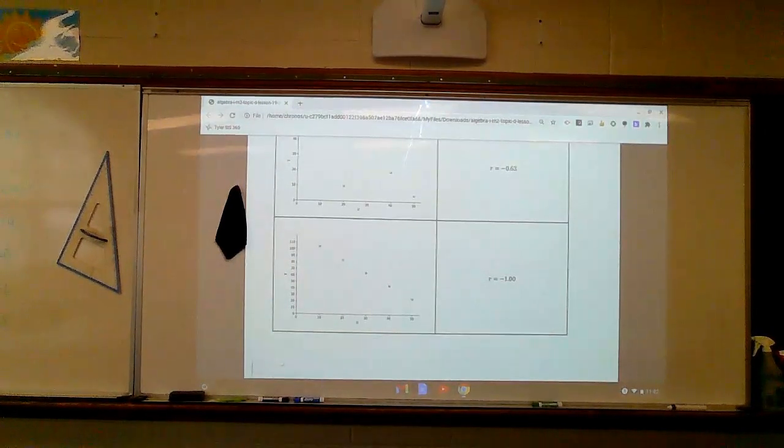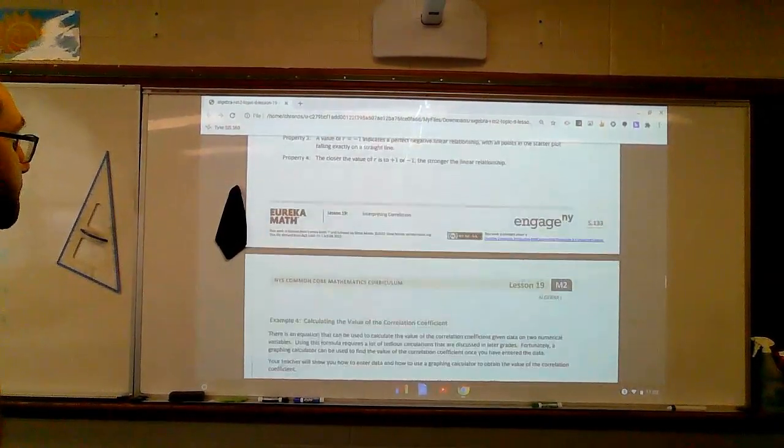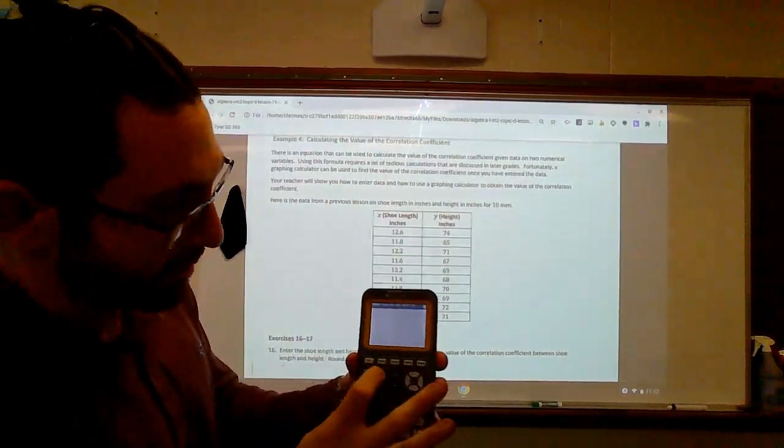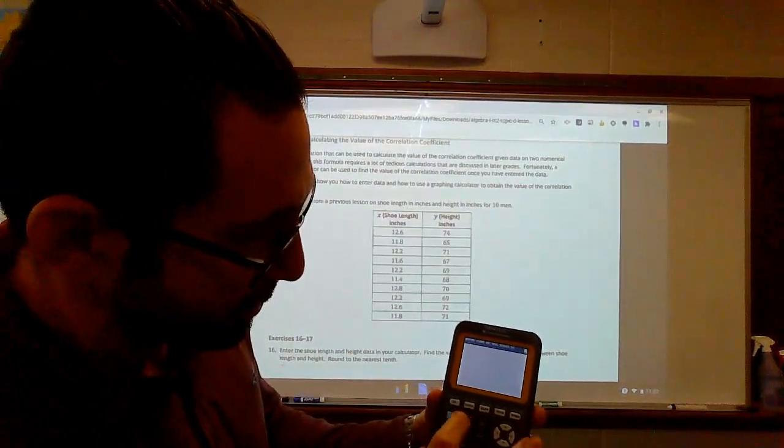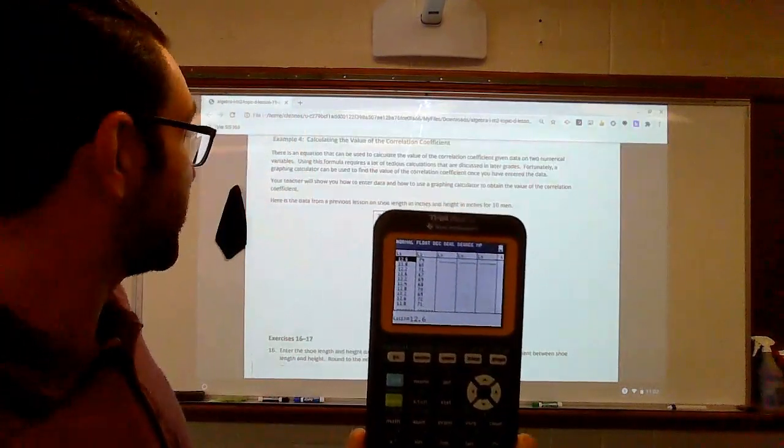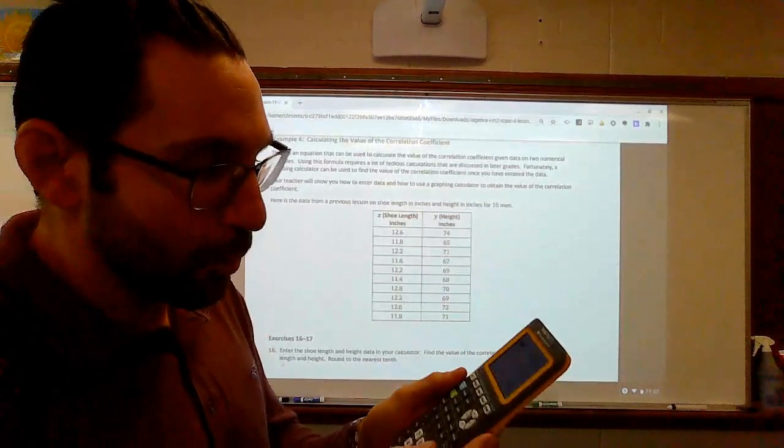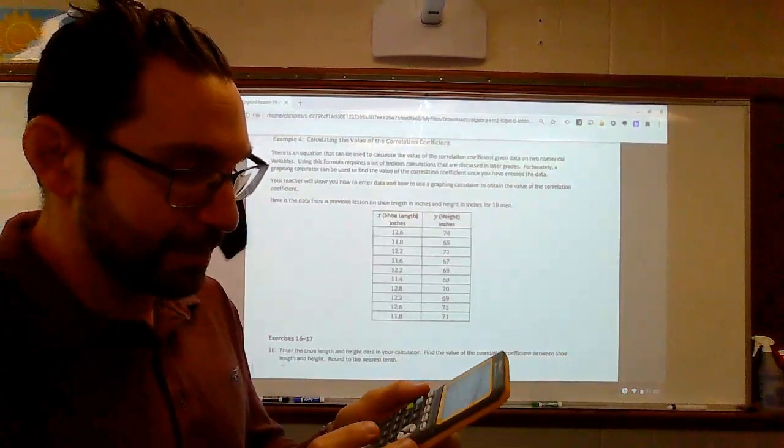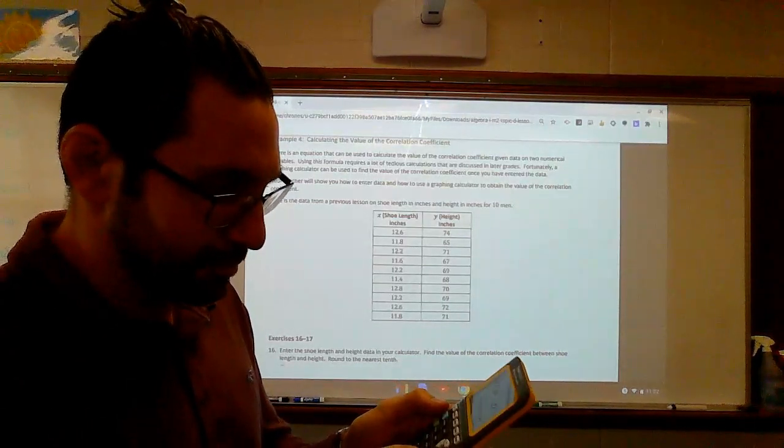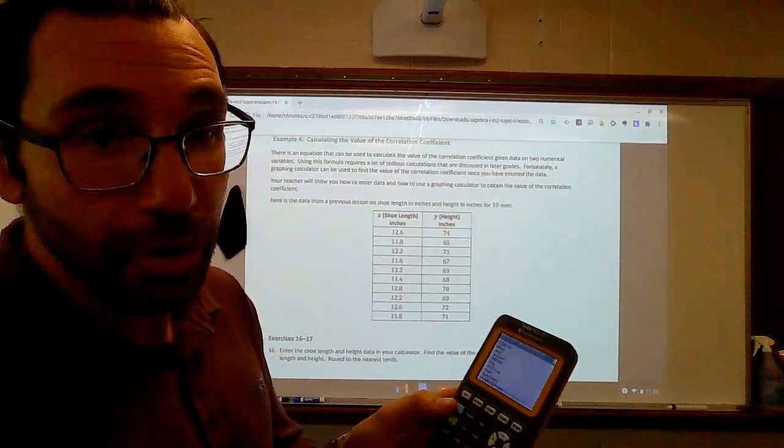Well, let's go to example four, which is our shoe lengths, which I believe I still have in my calculator. So I go to stat. I go to my list. I've still got my shoe lengths in there. So how do we find the correlation? Well, first off, we need to make sure that we've got everything in here correctly.